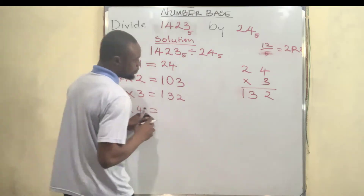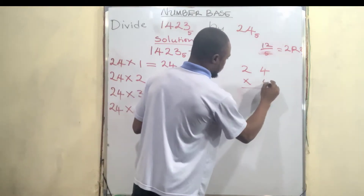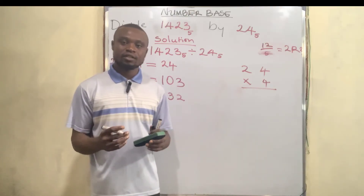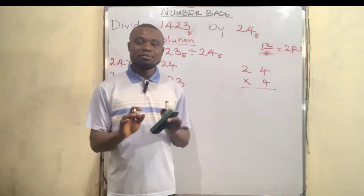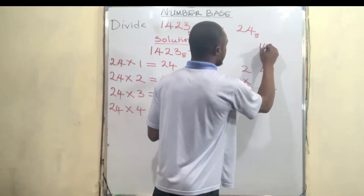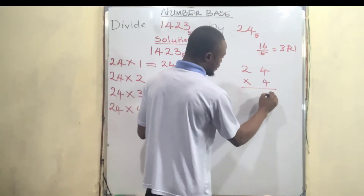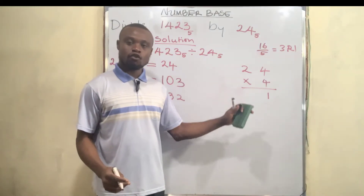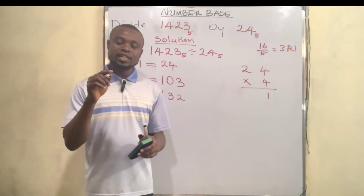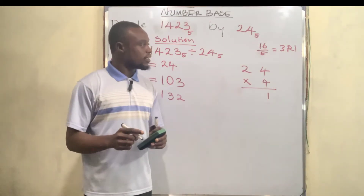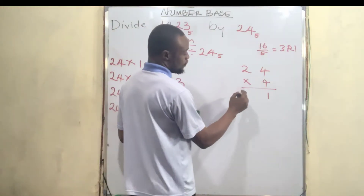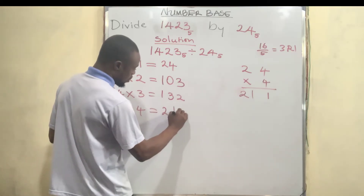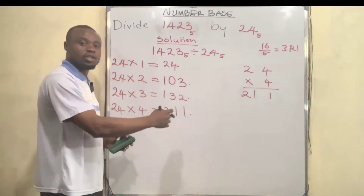Finally, 24 multiplied by 4: four times four is 16. What is 16 in base 5? Five goes into 16 three remainder one, so we write 1 and carry 3. Then four times two is eight, eight plus the carried 3 is 11. Eleven in base 5 is two remainder one, so we write 2 and carry 1. Therefore 24 base 5 multiplied by 4 is 211 base 5. Now we have all our multiplications.